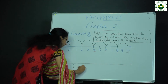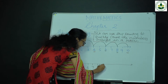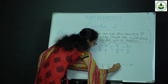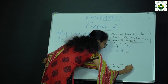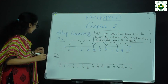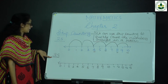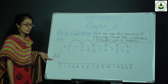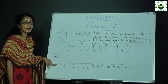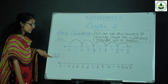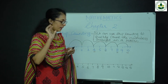Mark numbers from 0 to 15 on the number line. For skip counting of 3s, I start from 0 and count how many times? 3 times. So: 1, 2, 3 — from 0 to 3.